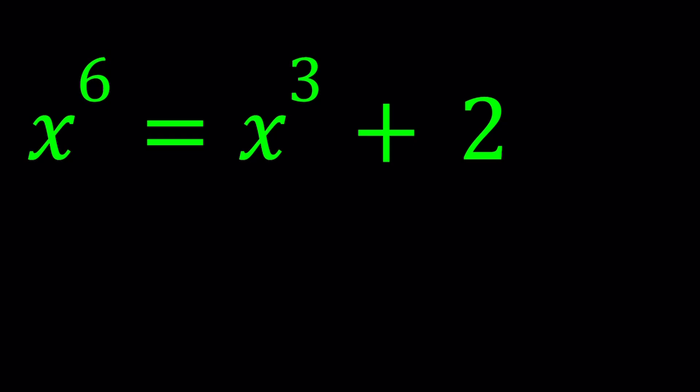I call this equation nice, actually very very nice because it's missing a lot of terms. Imagine you had an equation like x to the 6th equals 5x to the 5th minus x to the 4th plus 2x cubed minus 7x squared plus 8x. Could you solve this problem? Probably not.